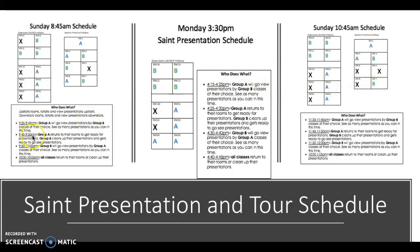Then the next thing that's going to happen is you guys are going to return to your classes and get ready to present if you are the B group. The A groups will then come and see the B group present. And then the last thing is everybody cleans up. So depending on if you are A or B, the first thing is one group presents, people come watch them, and then it flips — if you are presenting, you go watch, and if you are watching, you go present. That's what the tour looks like that day.